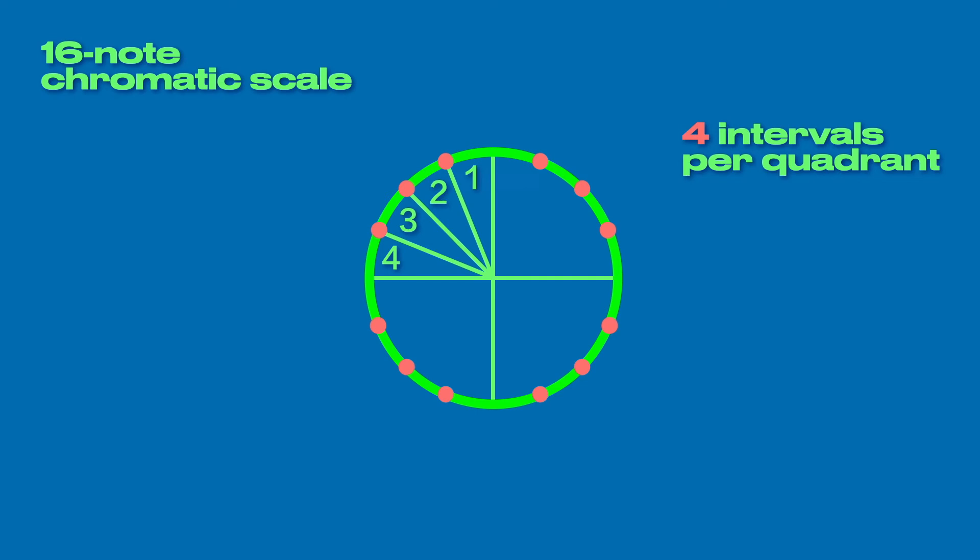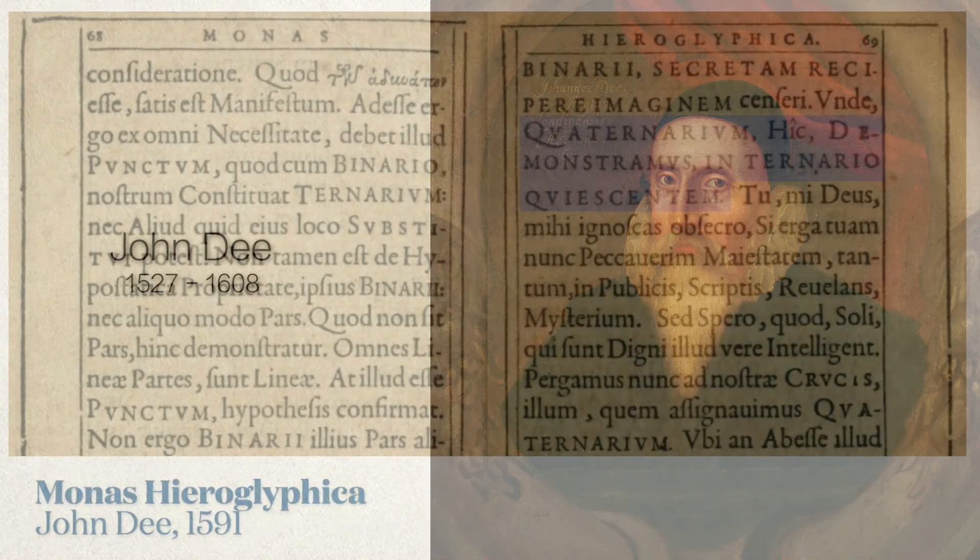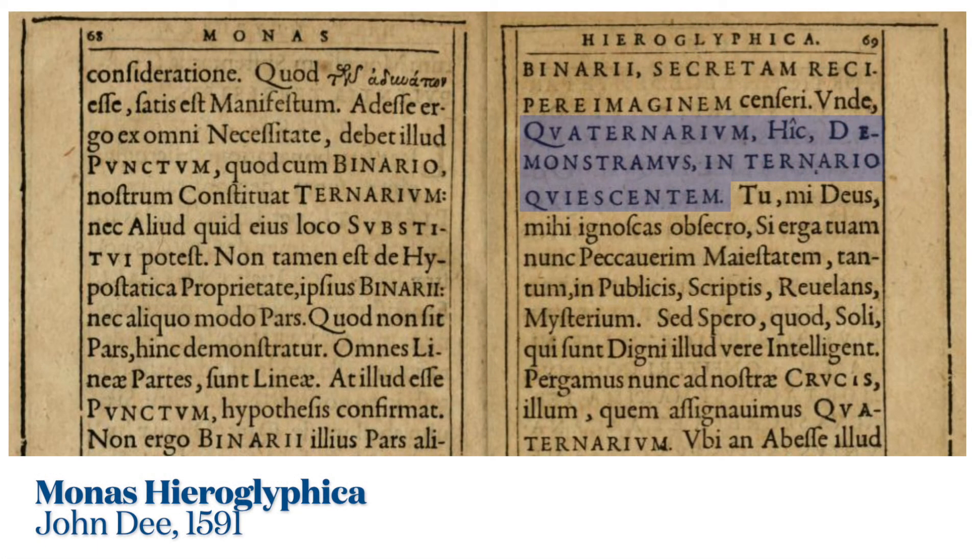This hidden fourth interval brings to mind the Elizabethan mathematician and occult astrologer John Dee, who taught that within every ternary, or grouping of three, there's a hidden fourth, or quaternary.